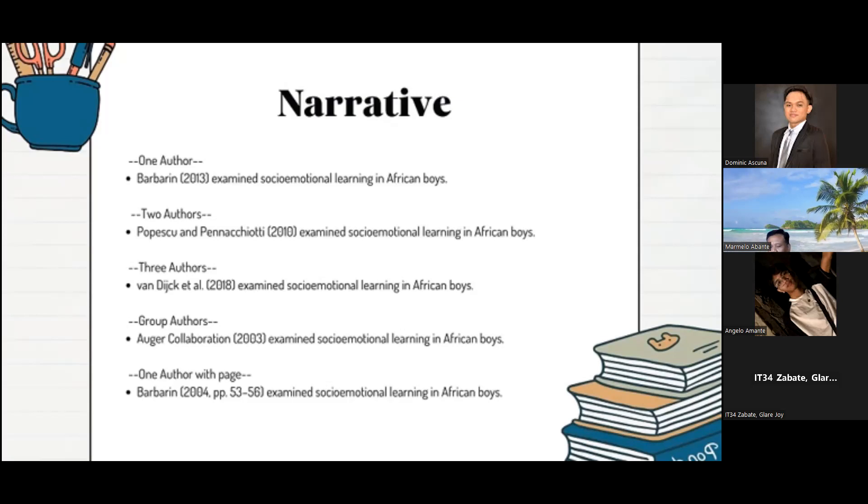If we are citing an author with page, for example, Barbarian (2004, p. 53-56). Here we can see the author's name and the publication year and page numbers in open-close parenthesis.